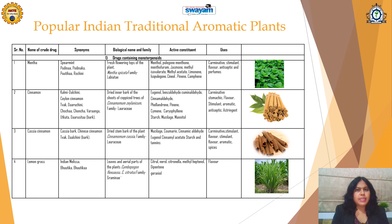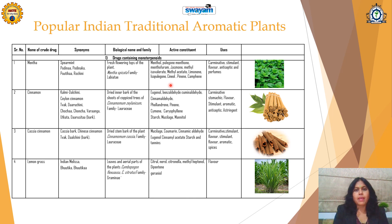The first popular Indian traditional aromatic plant is Mintha, which is called as Spearmint, Pudina, or Rochini. It contains the fresh flowering tops of the plant Mintha spicata, Family Labiaty. It contains monoterpenoids: menthol, pulegon, menthone, piperitone, menthyl acetate, pinene, and camphene.